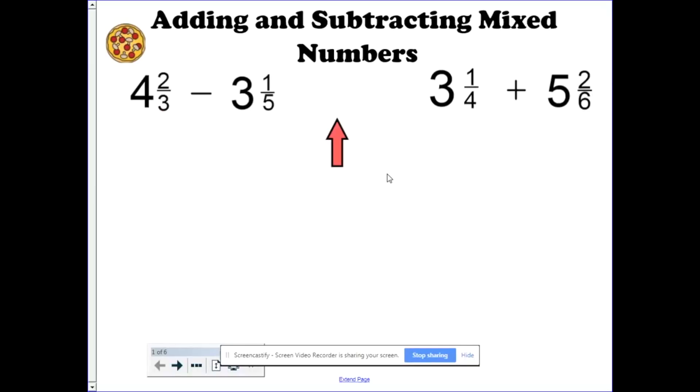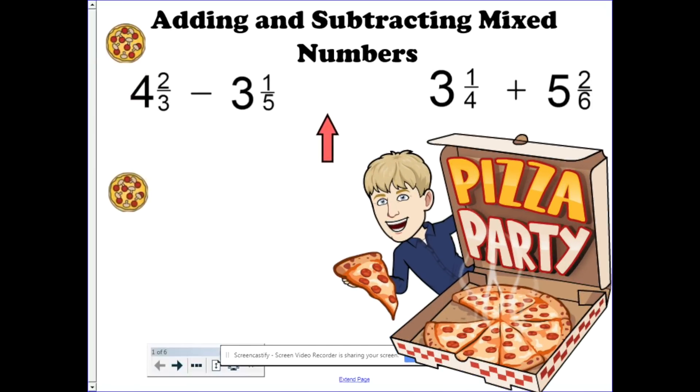Visually speaking, if I have 4 and 2/3, that means I have 1, 2, 3, 4 whole pizzas, and then I have a fifth one, but I don't want the whole thing. I only want 2/3 of it, so I'm going to go ahead and scratch out this third. And so I have my 1, 2, 3, 4 pizzas, and my 2/3 of a pizza. So that's what a mixed number is.